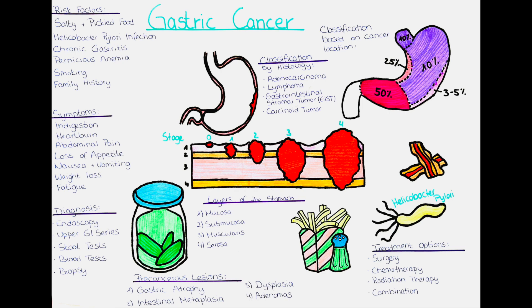Precancerous lesions, also known as precursor lesions, are abnormal changes in the cells of the stomach lining that can potentially develop into stomach cancer over time. These lesions are important to identify because they provide an opportunity for early detection and intervention to prevent progression to cancer. The two most common types of precancerous lesions in the stomach are gastric atrophy and intestinal metaplasia. Gastric atrophy is a condition in which the normal stomach lining is replaced by inflamed, damaged tissue. It can be caused by chronic infection with the bacterium Helicobacter pylori, which is a major risk factor for stomach cancer.